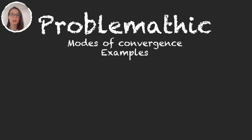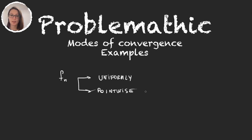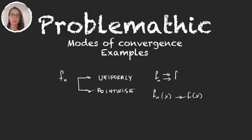Modes of convergence is something that we already know about. We know that if we have a sequence of functions fn, then they can converge in a few different ways — like uniformly, which we denote with a double arrow, or pointwise.